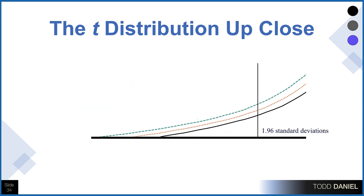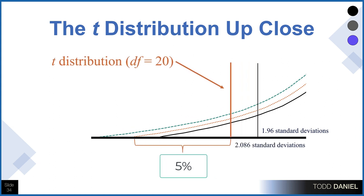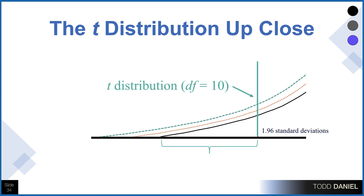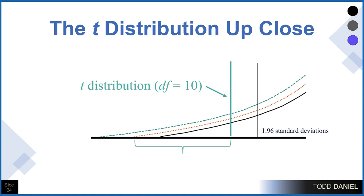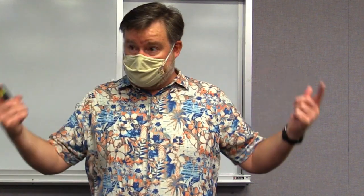The 1.96 standard deviation cutoff gives us the range where 5% of the scores are divided into the two tails. With a t-distribution at degrees of freedom of 20, we move the cutoff score out to the end of that tail, increasing from 1.96 to 2.086 standard deviations. With 10 degrees of freedom, we need to move the cutoff all the way out to 2.228 standard deviations. So the t-distribution cutoff is always going to be a larger number than 1.96.